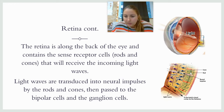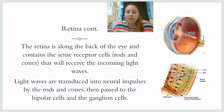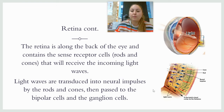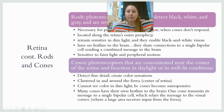So we have our rods and cones. Light strikes the retina and goes to the very back. The rods and cones will change this information and send it into a cell called a bipolar cell — meaning it has two poles. The bipolar cell will then send that information to the ganglion cells. The ganglion cells all bundle together, forming what we call the optic nerve. We're going to talk about this more in class in depth.